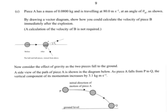And I've copied the diagram down just here for convenience. By drawing a vector diagram, show how you could calculate the velocity of piece B immediately after the explosion. A calculation of the velocity of B is not required.